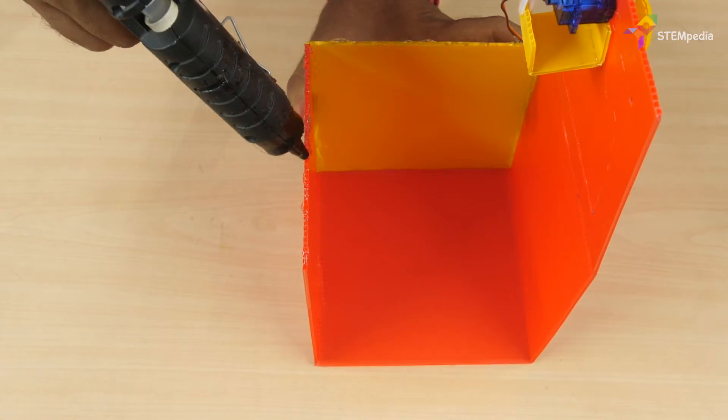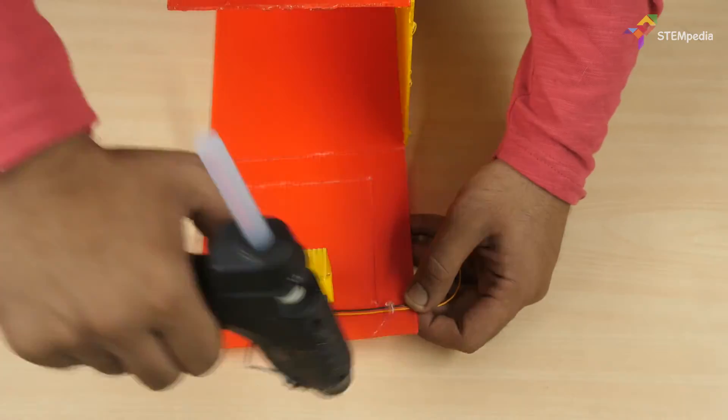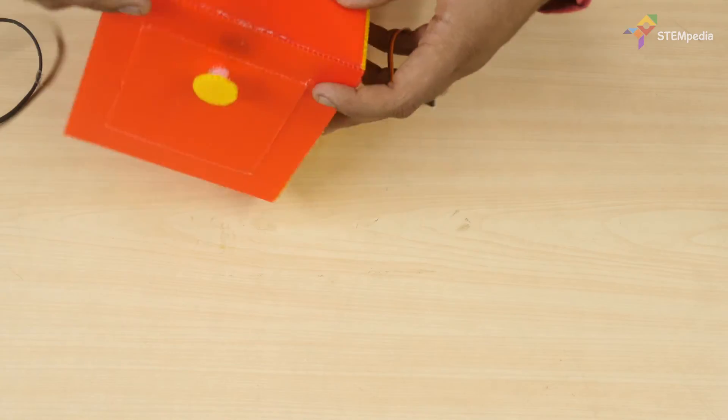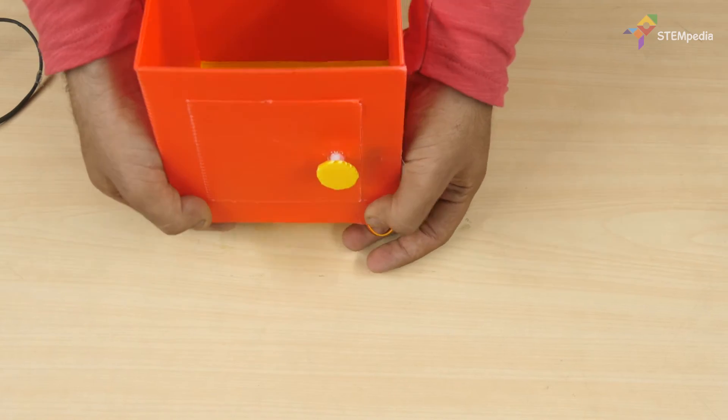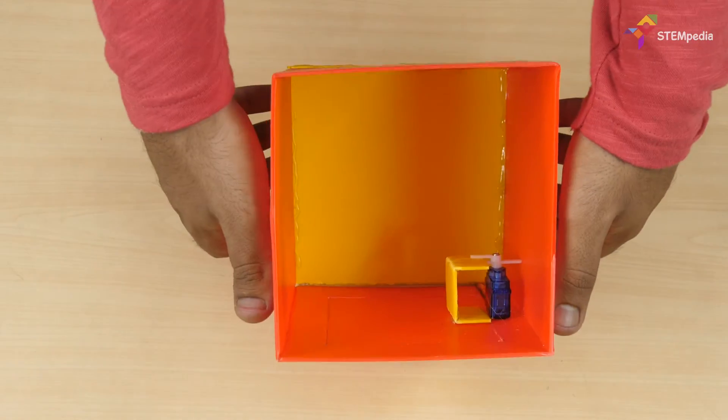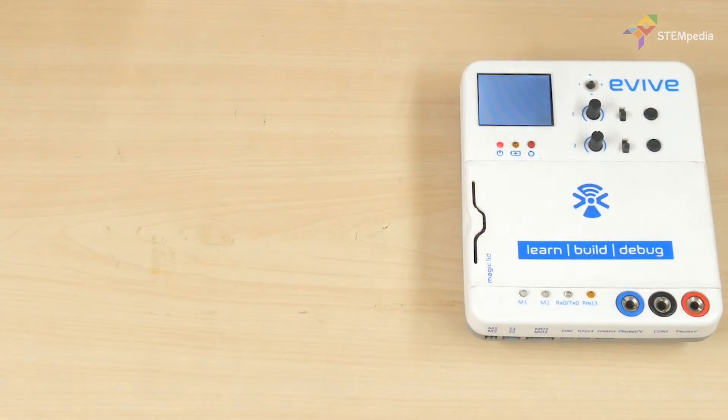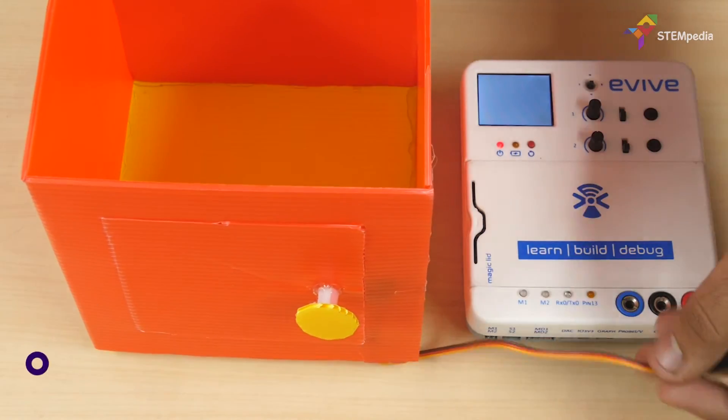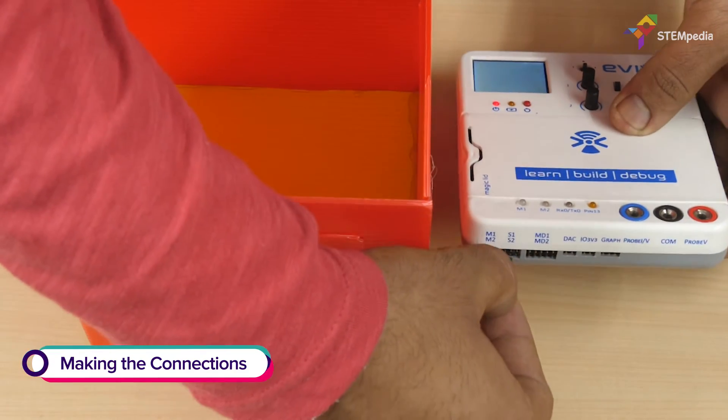Now, paste the fourth side wall using hot glue. Next, connect the servo motor to evive's servo channel 2.